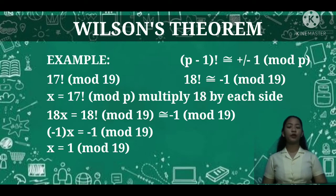For example, 17! (mod 19). We know that 18! ≅ -1 (mod 19).